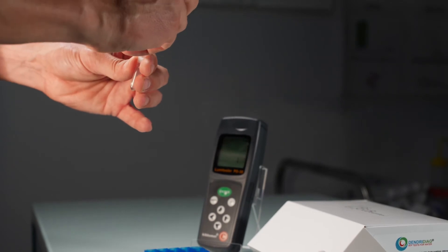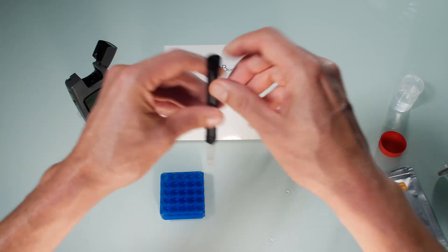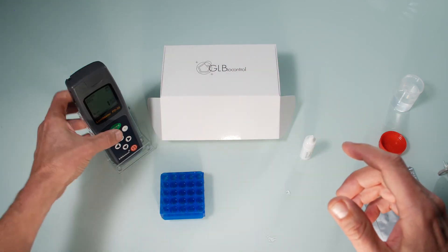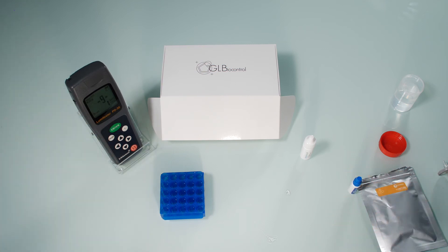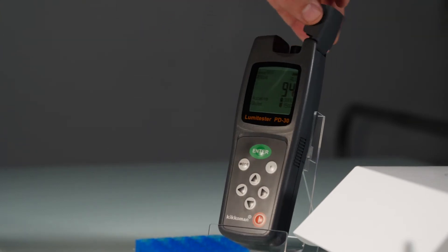Clip the lumi tube onto the end of the tube holder, slightly agitate and place the tube and holder in the luminometer. Close the lid and press enter to start the measurement. The result referred to as value R1 will take 10 seconds. Note it down.